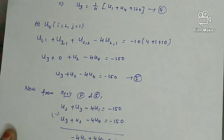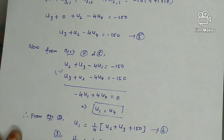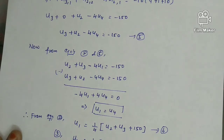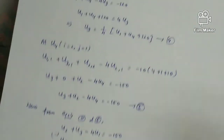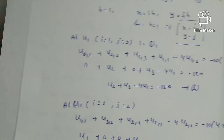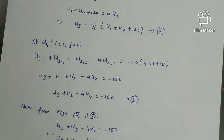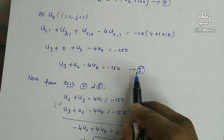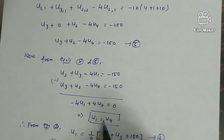Comparing equations 2 and 5, we find that u1 equals u4 by symmetry. This gives us the relation in equation 6. Using this symmetry, equation 7 becomes: u2 equals one-quarter times (2u1 plus 180). Equation 8 becomes: u3 equals one-quarter times (2u1 plus 120). We will solve equations 6, 7, and 8 using the iterative method.